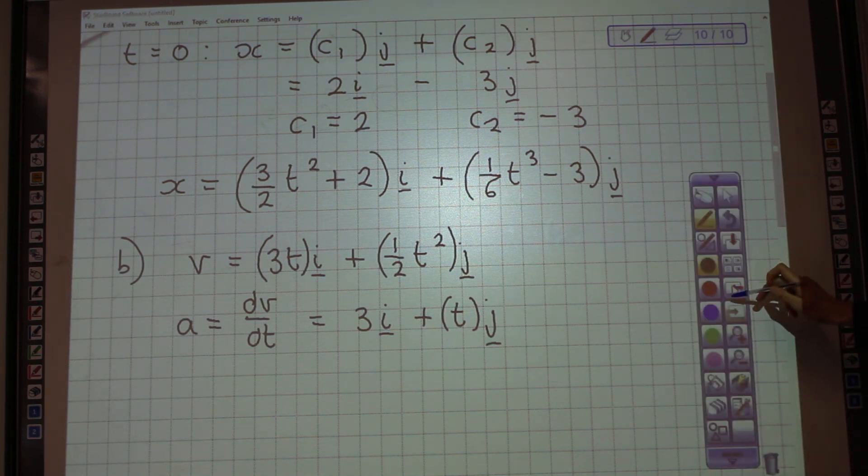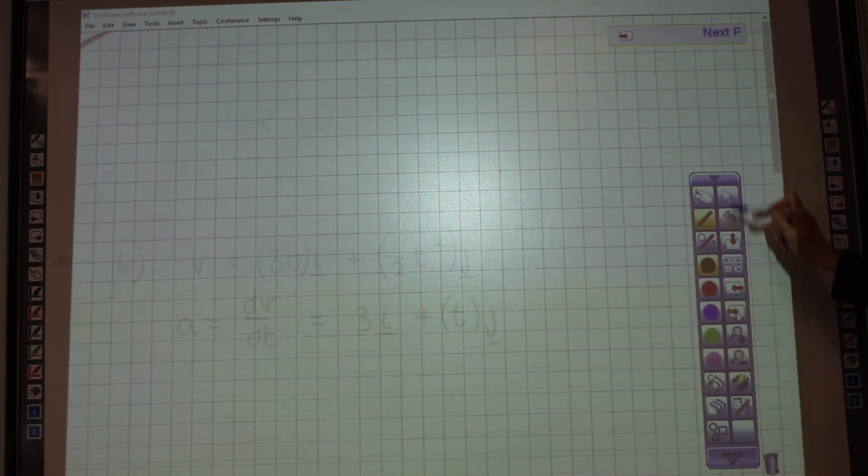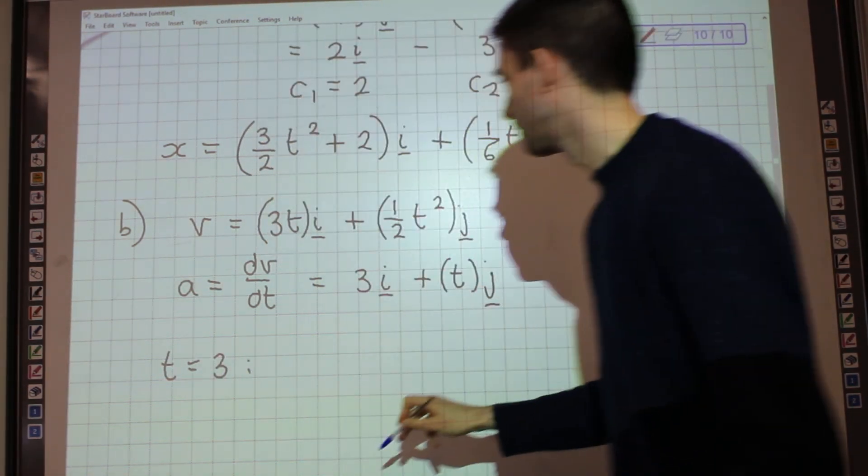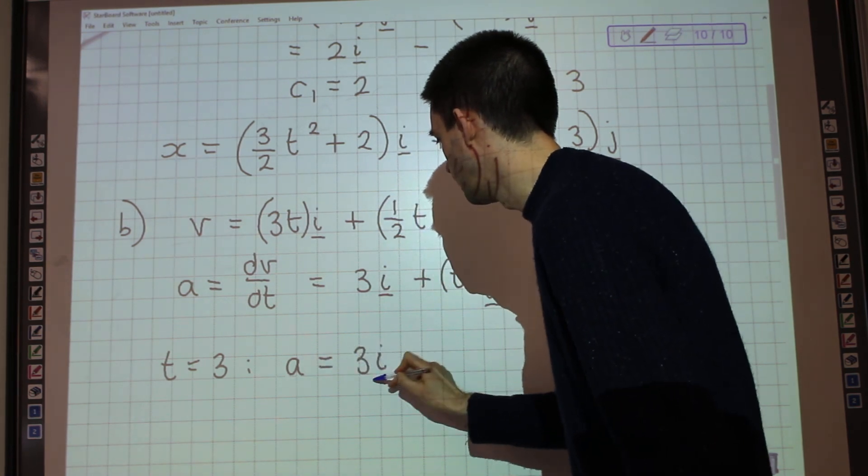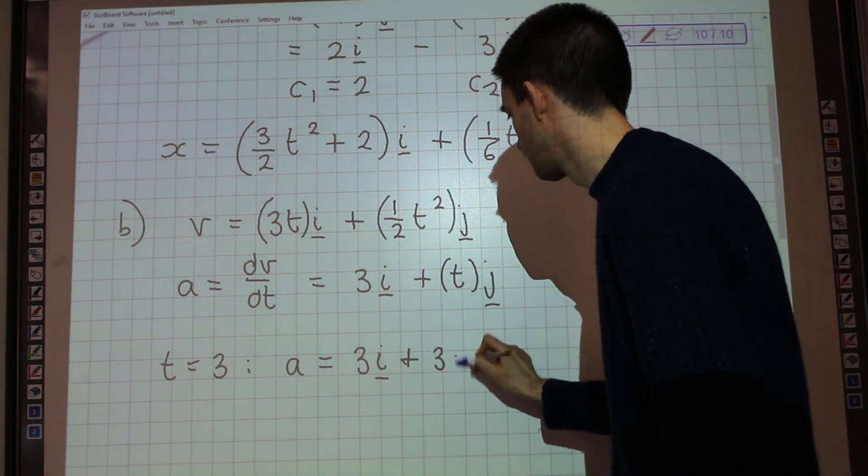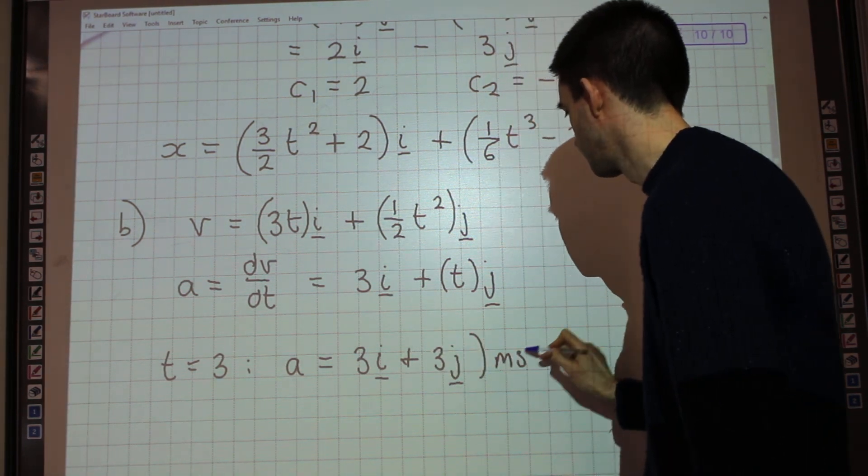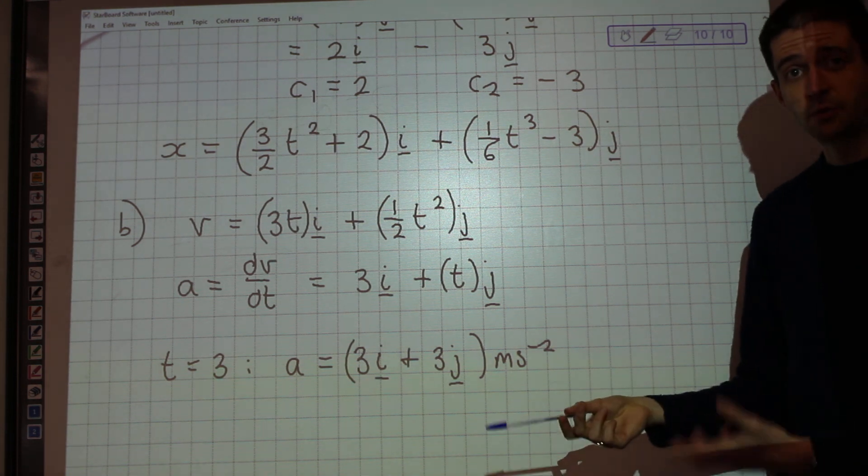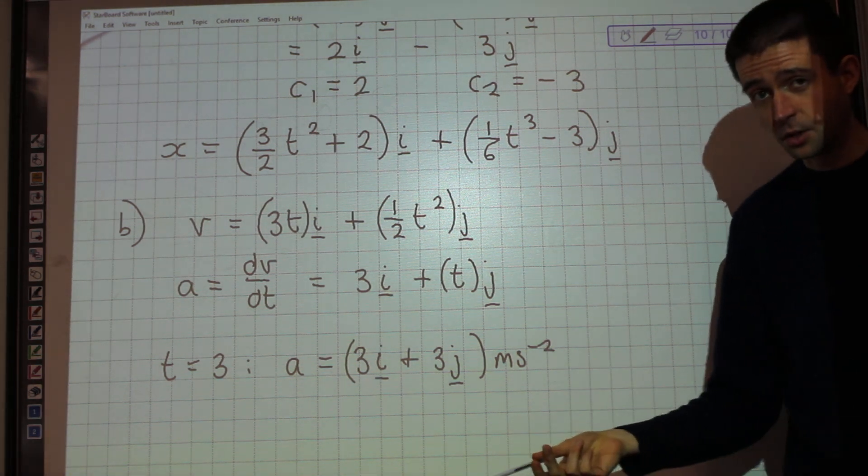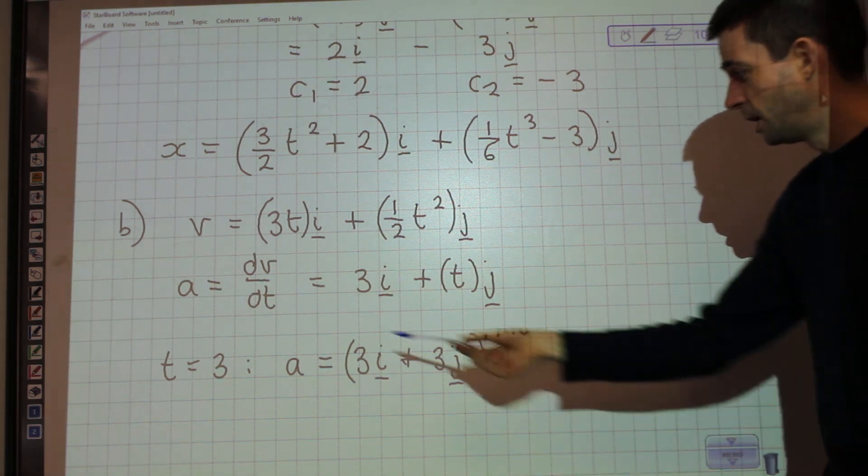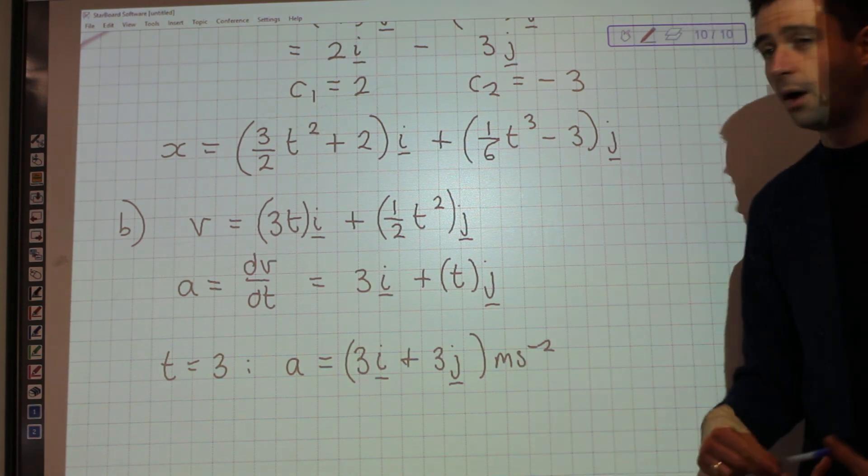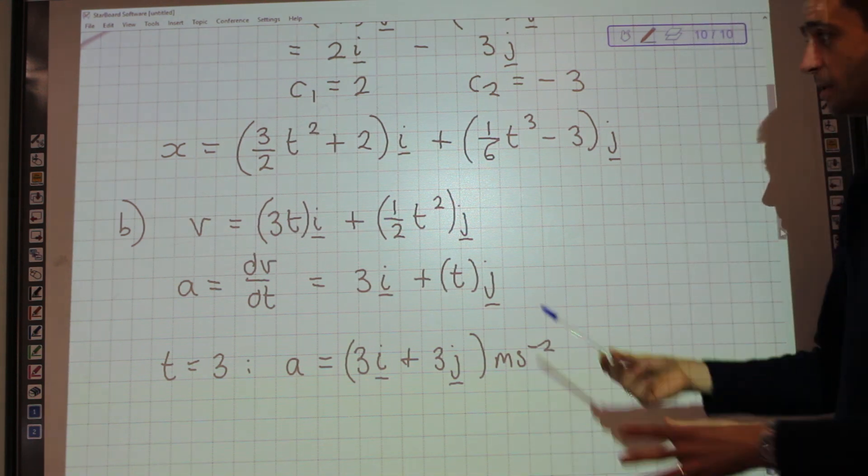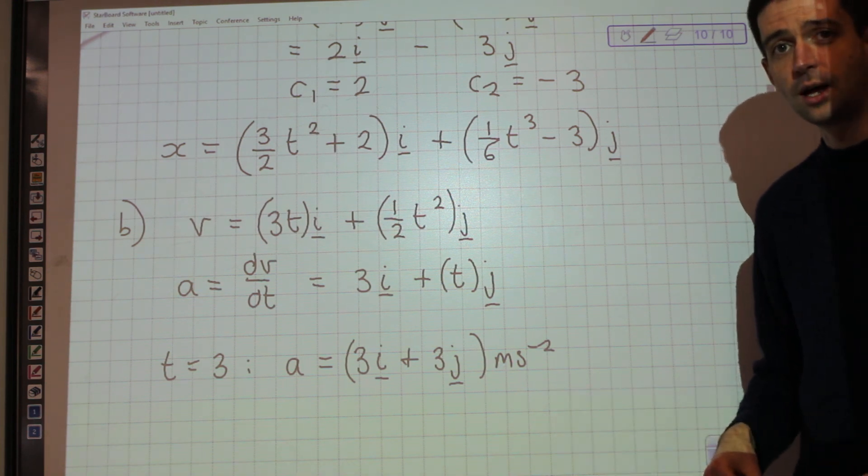So that is an expression for my acceleration at time t. And I was asked for the acceleration when t equals 3. Therefore, all I need to do is to sub in t equals 3 and get that a equals 3i plus 3j. That's in vector form, which is fine, because that's what I was asked for. I was asked for acceleration. Acceleration is a vector quantity. If I'd been asked for the magnitude of the acceleration, I'd have to go through, crack out Pythagoras and get it as a number. If I was asked for the direction of the acceleration, I'd have to crack out some trig and work out the angle. But all I've been asked for is the acceleration. So at this stage, that is done.